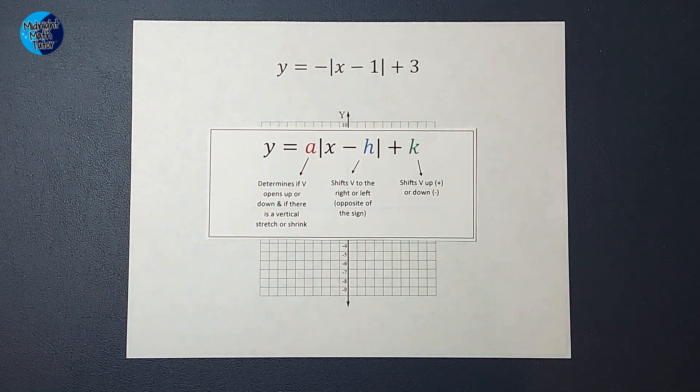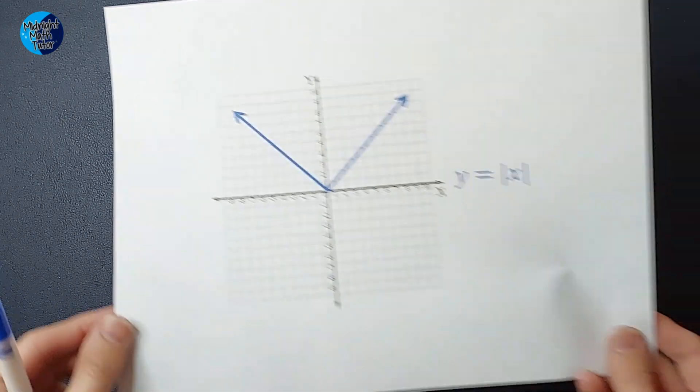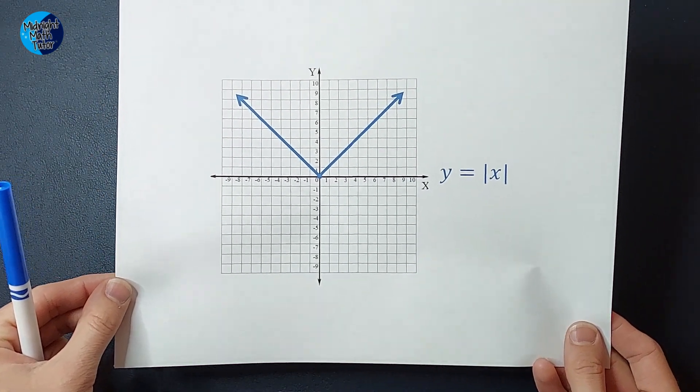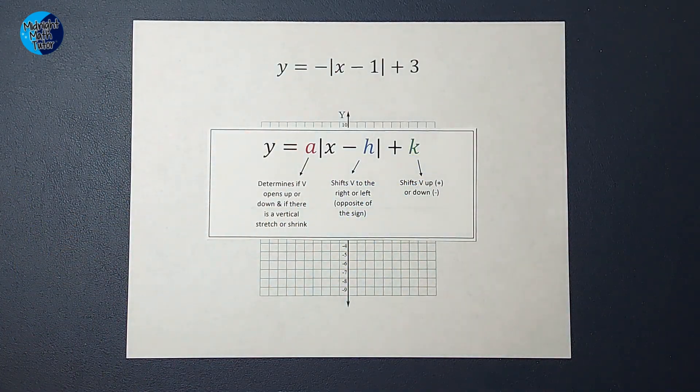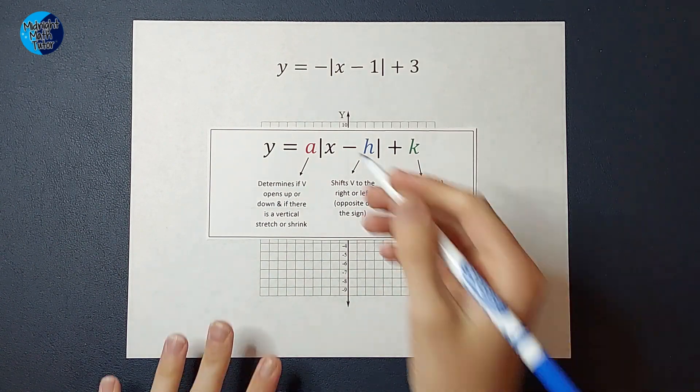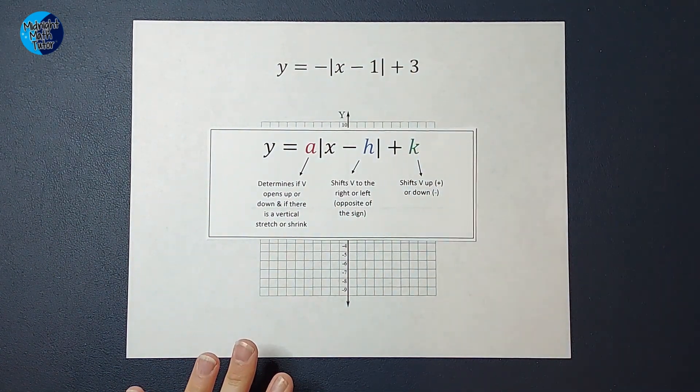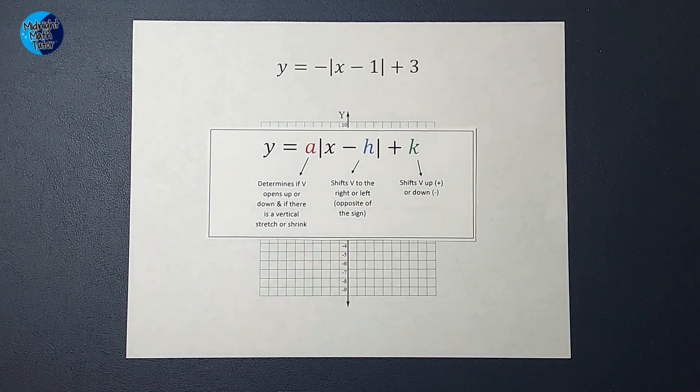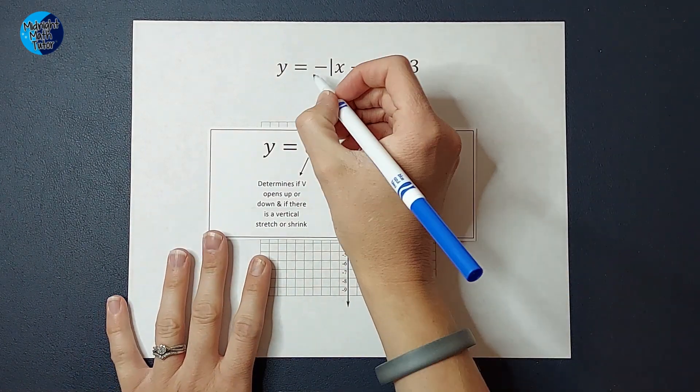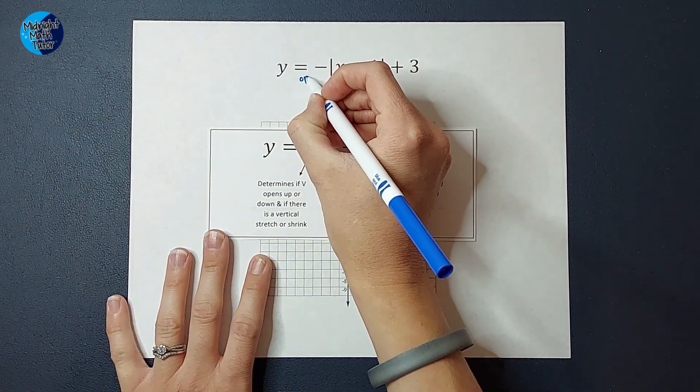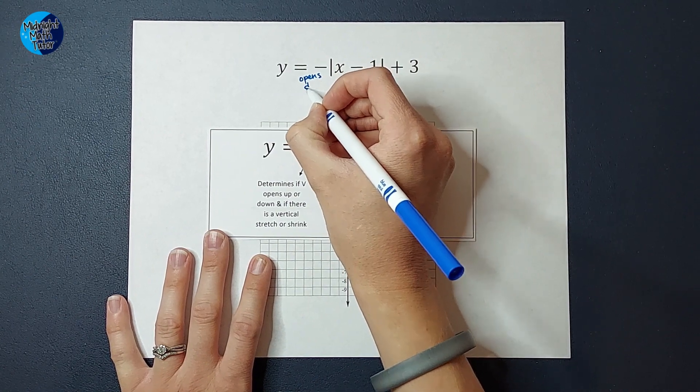If you have a negative, remember how this parent graph, the V was facing up. Since we have a negative there, I know that this is going to be flipped and the V will face down. So I like to just make a little note for myself that says something like opens down, so that I remember that.